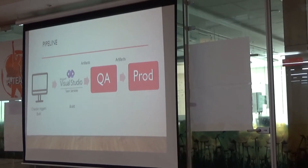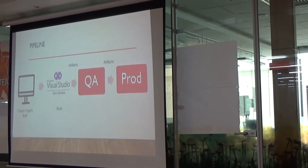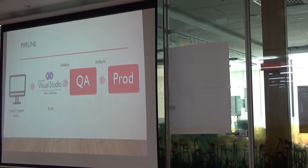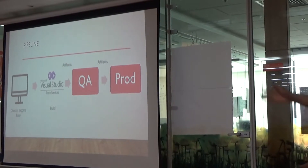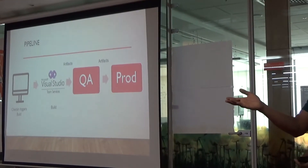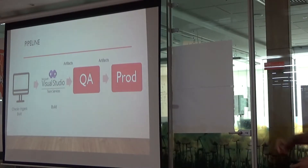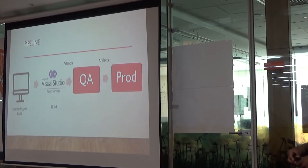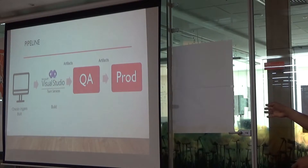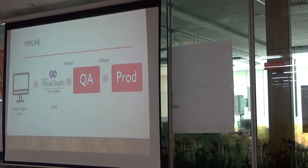The pipeline I'm going to talk about is very simple. I call this a working skeleton in architectural terms. All it does is: a check-in triggers a build, the source code is in Git within VSTS, VSTS builds the application and creates artifacts, and then it moves to a QA environment and then the same artifacts are put on to the production environment. This is a very basic skeleton — you could call it an MVP.